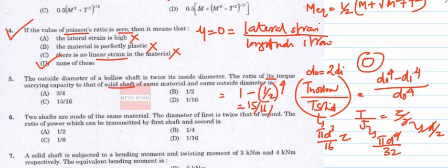This is a standard question in most competitive exams. You can directly write T_hollow / T_solid = 15/16 without full derivation.